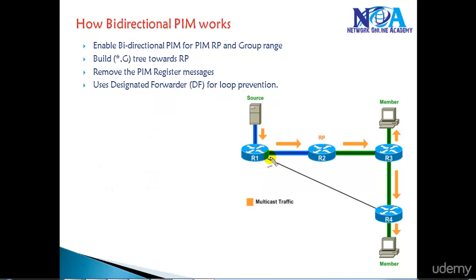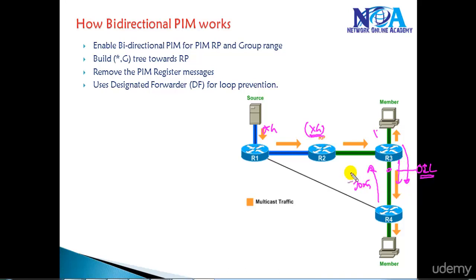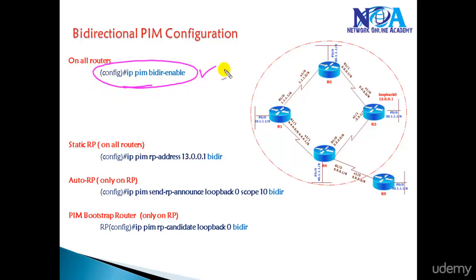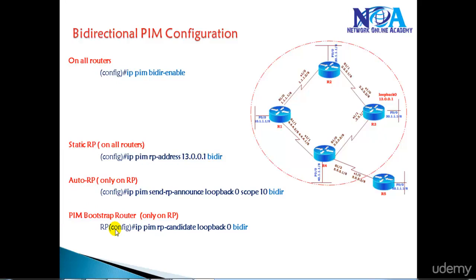Based on these three conditions the Designated Forwarder is decided, and out of two or more routers on the same segment, the elected DF forwards the traffic. Every router creates star comma G entries pointing towards the RP for each group, and points out the output interface based on PIM join messages received. If a join message is received on an interface, that interface is added to the output interface list for forwarding multicast traffic. Configuration-wise it is straightforward: enable 'ip pim bidirectional' on all routers with sparse mode already enabled, and add the appropriate RP configuration with the 'bidirectional' keyword depending on whether you are using static RP, Auto-RP, or Bootstrap Router.